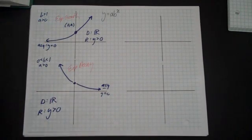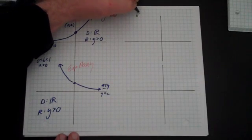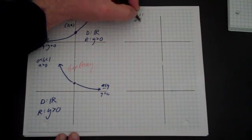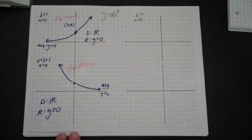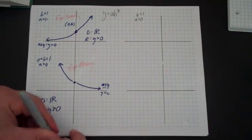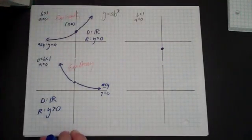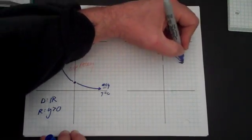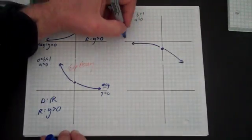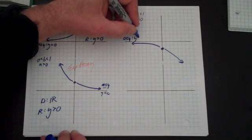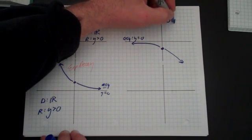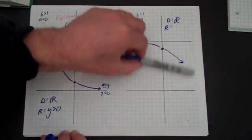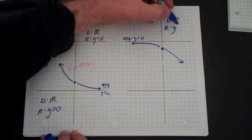Now if b is greater than 1 and a is less than 0, it's the same function but flipped. The function starts at a — which is now negative — and increases exponentially in the negative direction. The asymptote is still y = 0. The domain is all real numbers, and the range is everything less than the asymptote: y is less than 0.